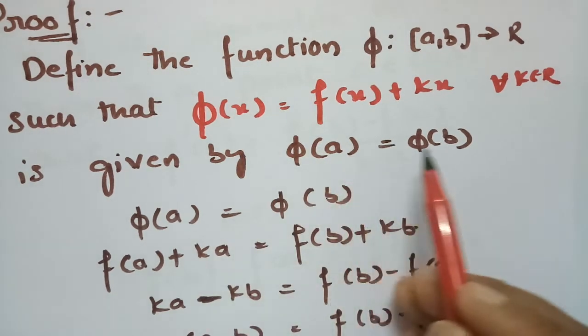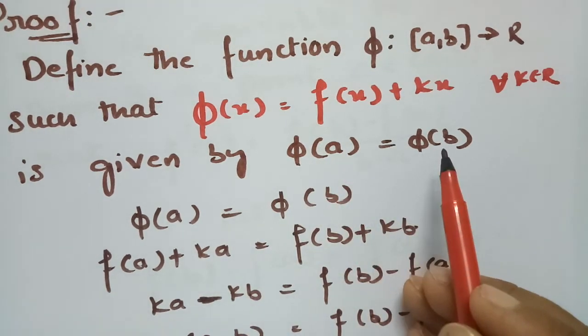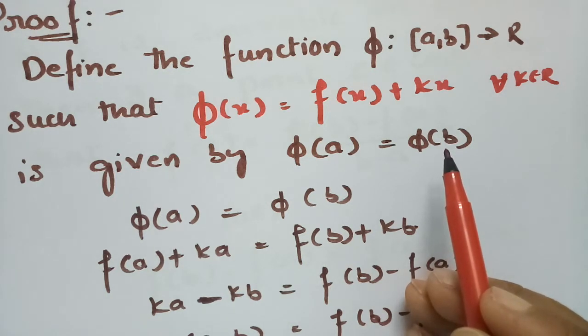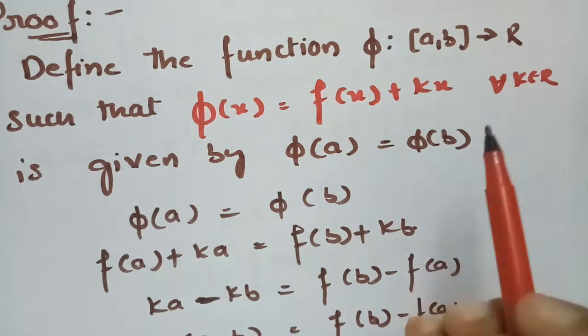So φ(x) is continuous on closed [a, b], derivable on open (a, b), and φ(a) = φ(b). Therefore we can apply Rolle's theorem, which gives us: there exists c belonging to open (a, b) such that φ'(c) = 0.